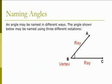Now when you name angles, looking at this same diagram, angles can be named in different ways. The angles shown below may be named using three different notations. The symbol for angle is like a little greater than sign. So that means angle. Whenever you are talking about an angle, you put this angle symbol there, just like when you are talking about a line segment, you put a line.